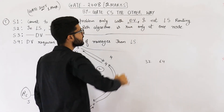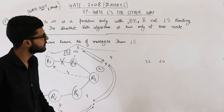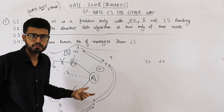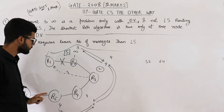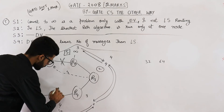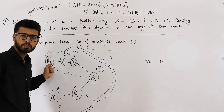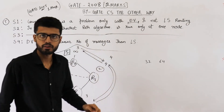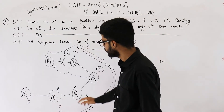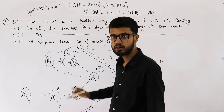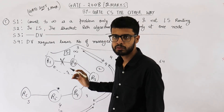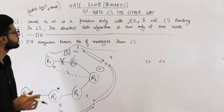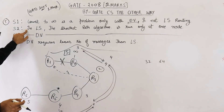Hence count to infinity is a problem only in DV. In link state routing this problem will never arise because we use flooding. Every router gets information from all other routers. For example, R5 will get information from R1, R2, R3, R4, and R6 — all of them send information, so R5 is aware that this link is down in the very first step. Flooding means every packet is sent to every router.